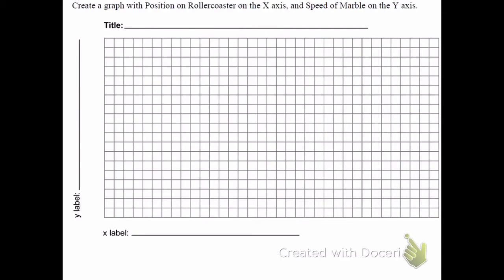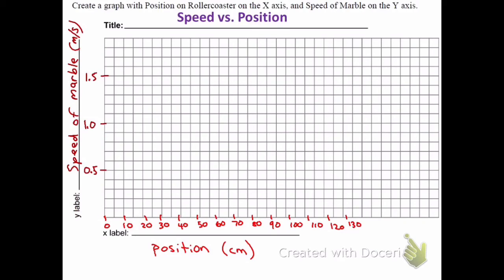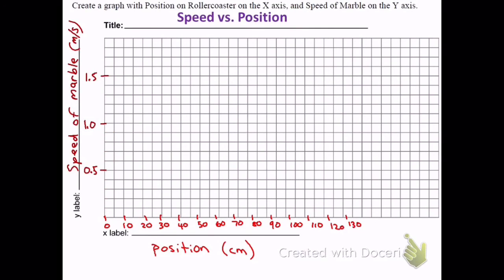Your second graph is going to compare the speed of the marble versus the position on the ramp. So the x-axis is the same, the position on the ramp from 0 to 130. Your data points are on the fives. And then the y-axis is going to be the speed. Now the speed of the marble in meters per second ranged from 0 to a little over 1.5 meters per second. So I counted by 0.1s. So 0.1, 0.2, 0.3, 0.4, 0.5, 0.6, 0.7, 0.8, 0.9, and 1.0, and so forth. You'll plot your data points and have a second graph.